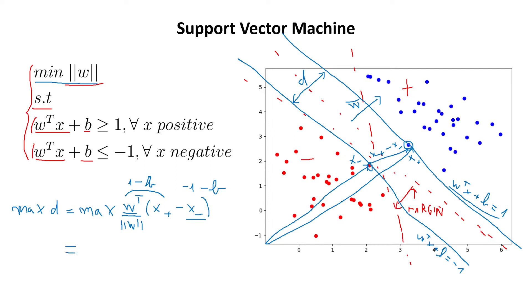Okay. And let's write it further. So we have maximum of 1 minus b minus minus 1 minus b. Okay. And everything divided by the norm of w. And writing this further, we obtain that this equals to maximum of 2. And here we have minus b. And on the other side, we have minus minus b, which is equivalent to plus b. So the b term disappears and we remain with 2 divided by the norm of w.